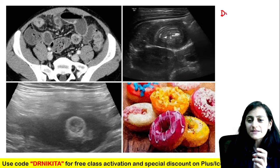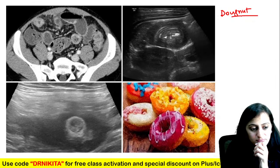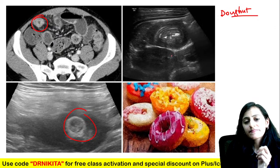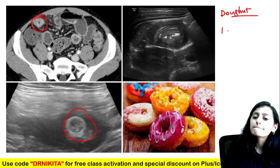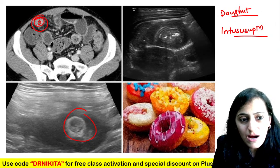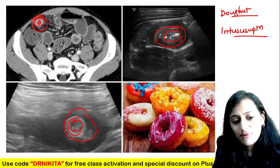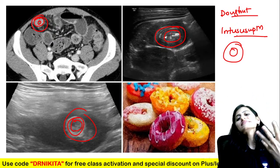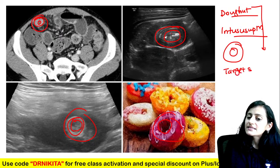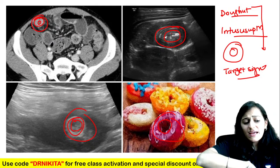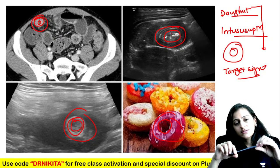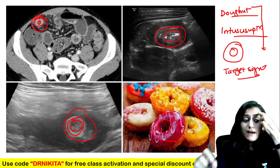The donut sign is seen with intussusception — a bowel within bowel appearance. The inner bowel and outer bowel give the donut with two circles — also called the target sign. The donut or target sign can also be seen with pyloric stenosis and inflammatory bowel disease.